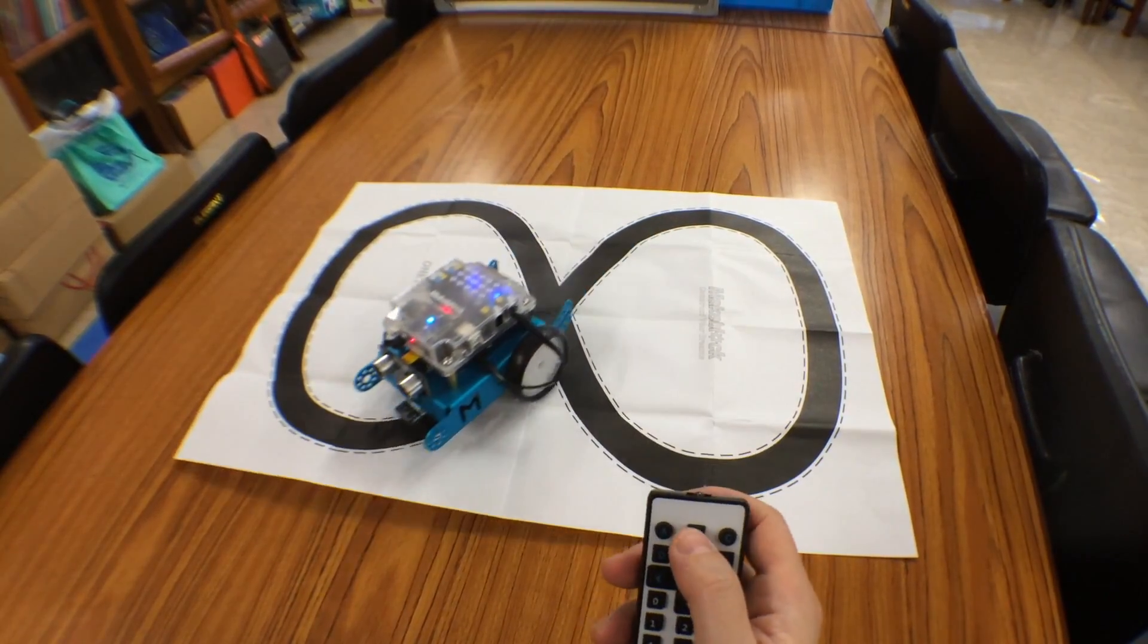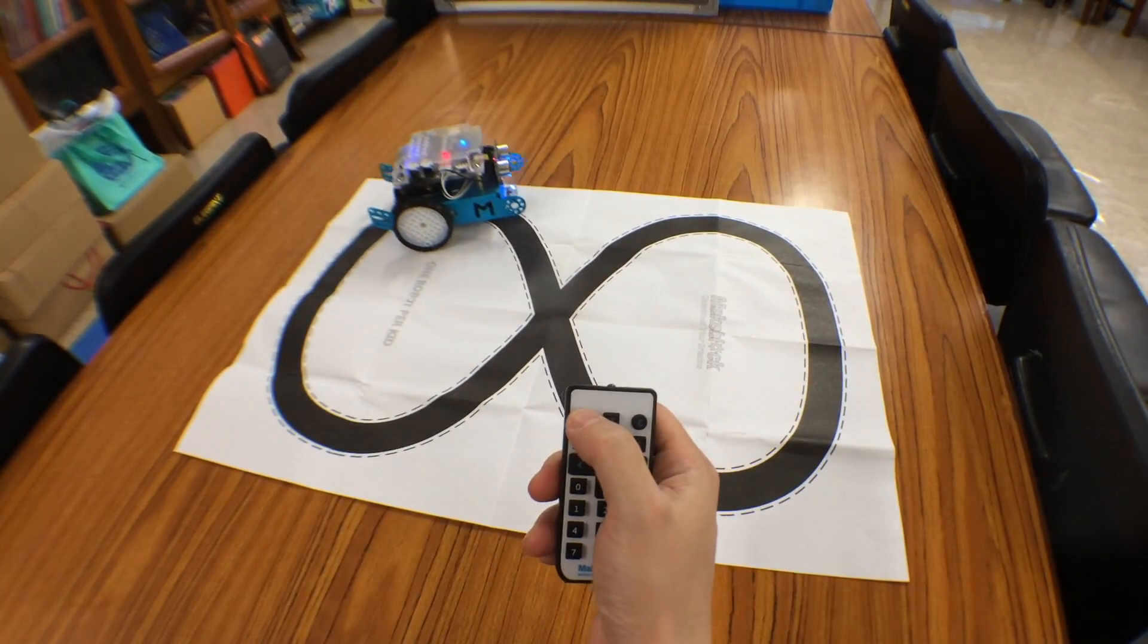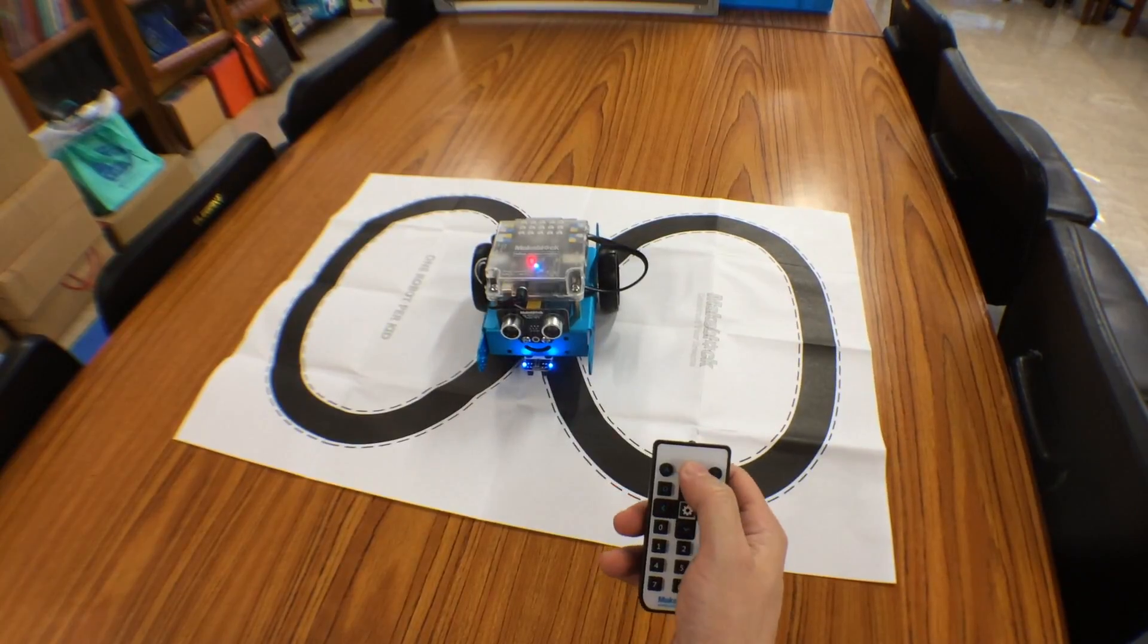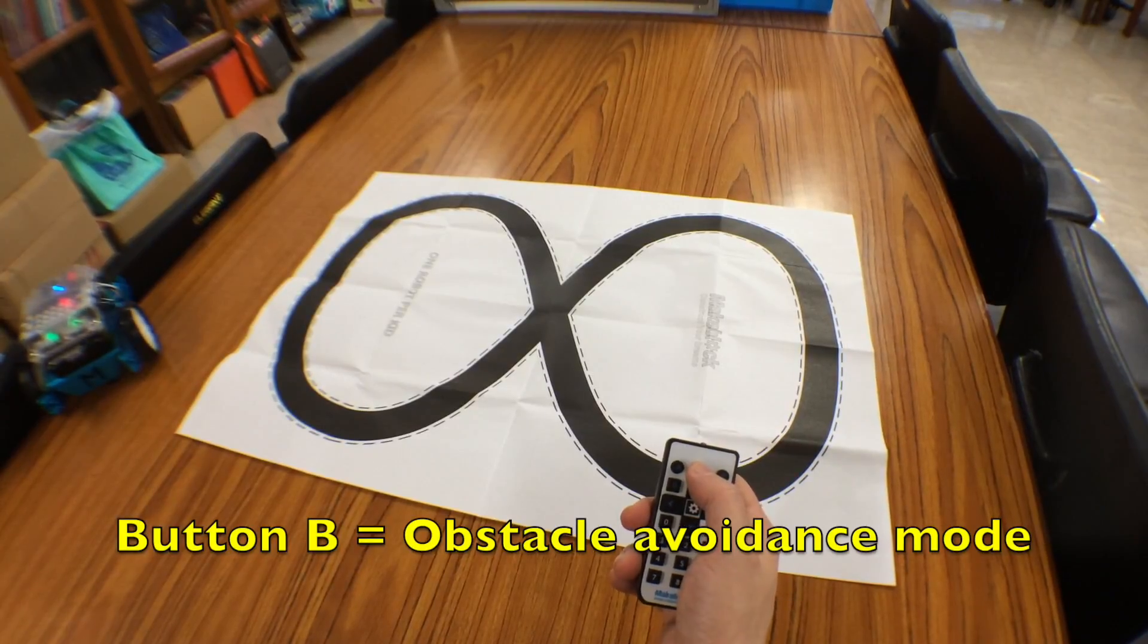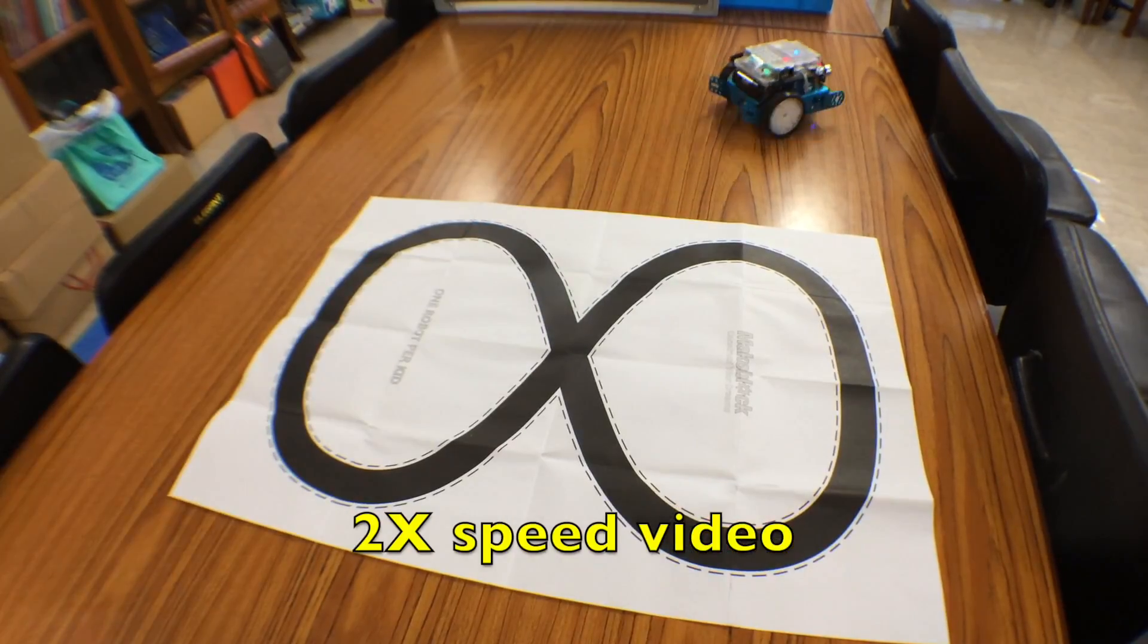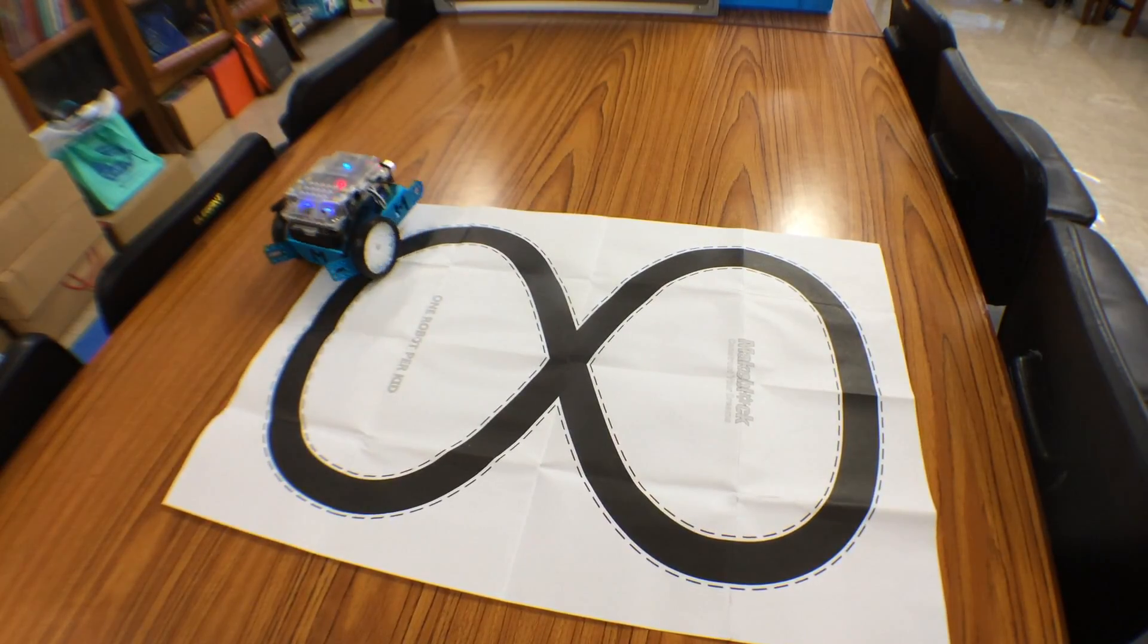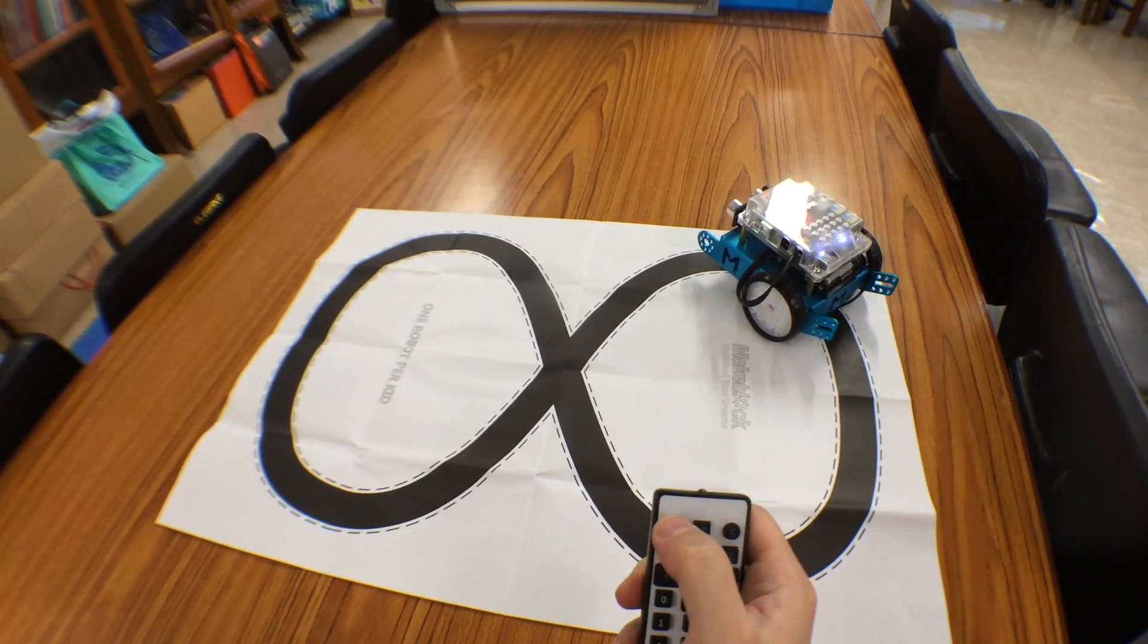You can also change the operating mode of the robot using this default remote control. If I press the A button again, it will change to the white lights in remote control mode. If I press the B button, it will go into the object avoidance mode. If I press the C button, it will go into the line following mode.